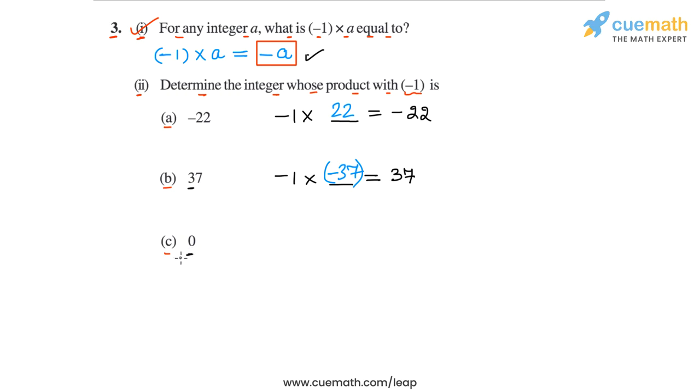So for this we write the statement: (-1) × 0 = 0. And now we note that the only integer which when multiplied with -1 gives 0 can be 0 itself. So we put 0 here and the statement becomes (-1) × 0 = 0.